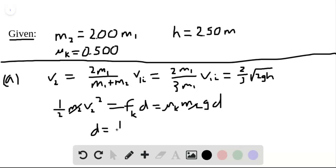D equals 1 half V2 squared divided by mu k times gravity. We just solved for V2, so we can plug in the value. So 2 thirds squared is 4 ninths. 4 ninths times 1 half is 2 ninths. And then root 2 G H squared is 2 G H. Divided by mu k times G. Gravity cancels. Plug in the values for everything else, and this comes out to be 2.22 meters.